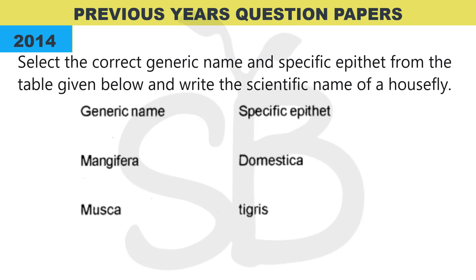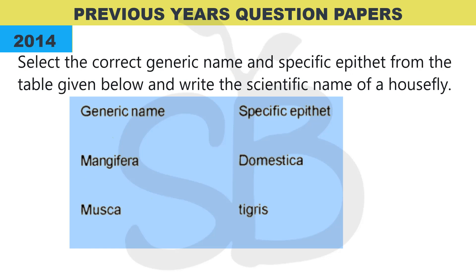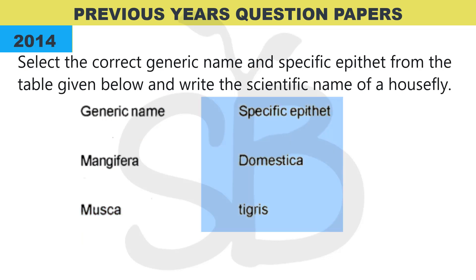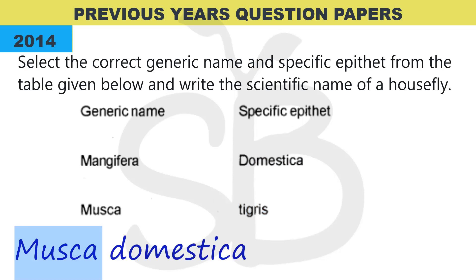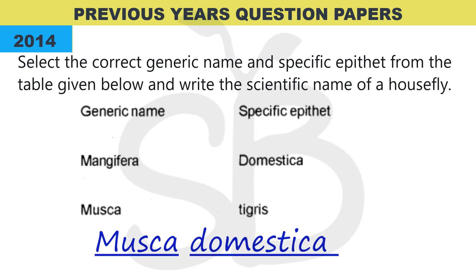From the 2014 improvement exam: 'Select the correct generic name and specific epithet from the table given below and write the scientific name of a housefly.' We have two generic names — Mangifera (name of mango) and Musca (name of housefly). The specific epithets are Domestica (species name of housefly) and Tigris (name of tiger). The rule is: generic name first, then specific epithet. So the scientific name of a housefly is Musca domestica — Musca is the genus name and domestica is the species name.